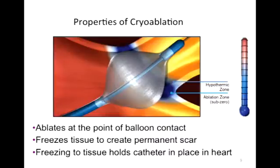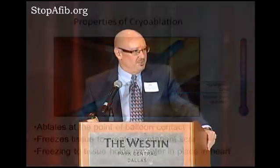This cartoon shows the balloon in a pulmonary vein and demonstrates that as it freezes, it creates a blue scar. I talk to patients about a moat around the pulmonary vein — a scar that prevents pulmonary vein potentials from getting into the atrium and causing AFib. I like Dr. Rizvi's analogy of a fence that blocks conduction into the atrium. In essence it's a scar created whether you use heating energy with the radiofrequency catheter or freezing energy with the balloon.